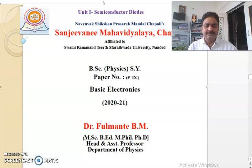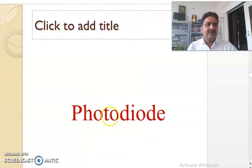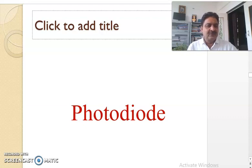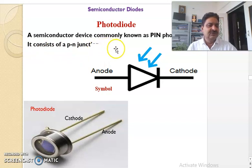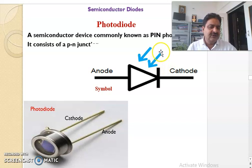Now we shall study about another type of diode — that is the photodiode. The symbol of photodiode is similar to the light emitting diode. It is also a semiconductor device commonly known as a PIN photodiode. It consists of a PN junction. The difference in the symbol between LED and photodiode is that here these rays are incident inward.